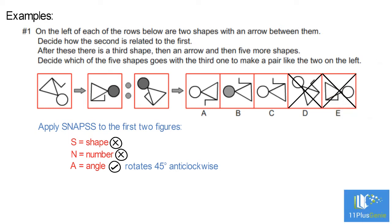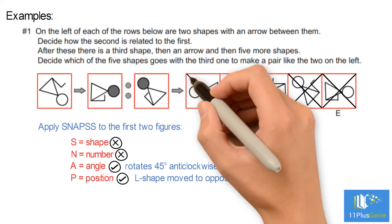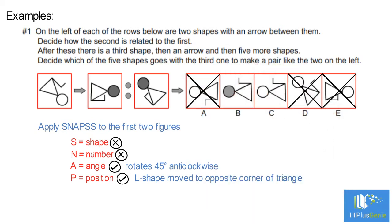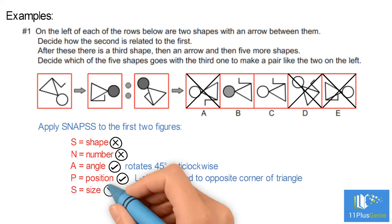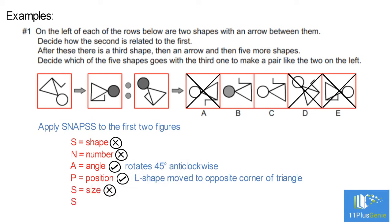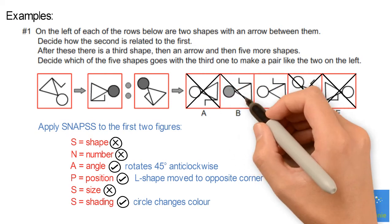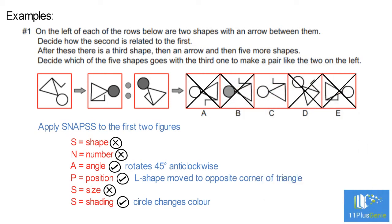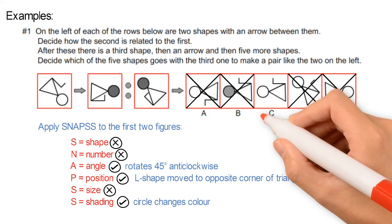P — Position: the L shape changed — it moved to the other side of the triangle, so we can eliminate A. S — Size of the shape does not change. S — Shading: the circle changes color. In B, the circle has the same color, so we can eliminate B. The correct answer is C.